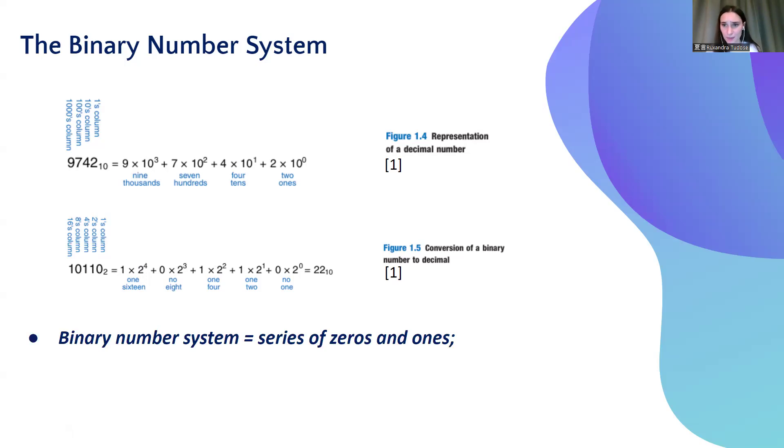So, all in all, one can think of the binary number system as a series of zeros and ones a computer can understand. That's it. Thank you very much for watching.